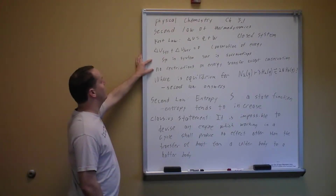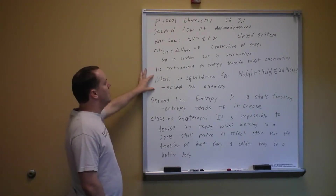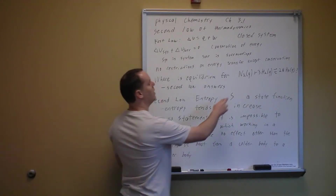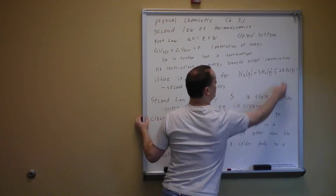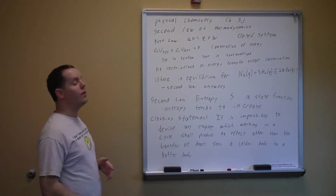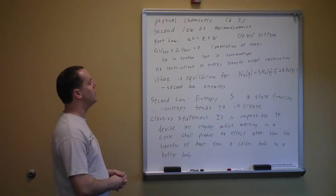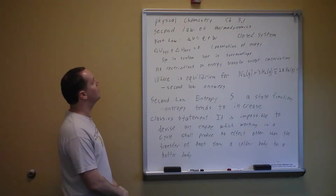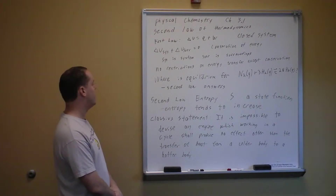The first law does not place any restrictions on energy transfer, as long as you're conserving energy. That brings up the obvious question: let's say we have a chemical reaction, nitrogen gas plus hydrogen gas to give us ammonia gas. Where is the equilibrium going to be? The first law can't answer that question — going all the way to the right or all the way to the left would be perfectly valid under the first law. But the second law of thermodynamics is going to allow us to come up with an answer.